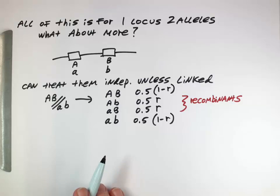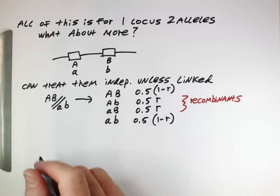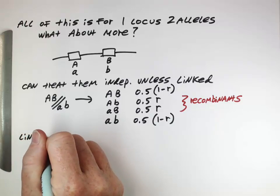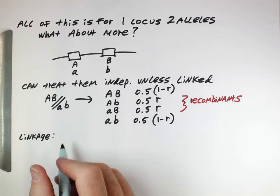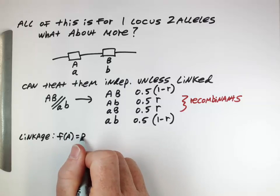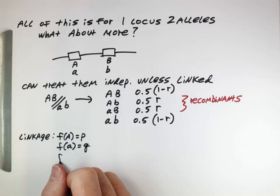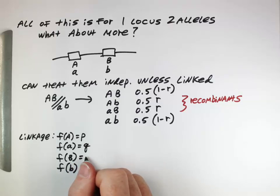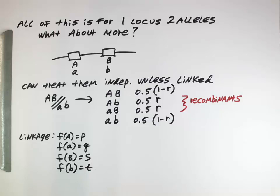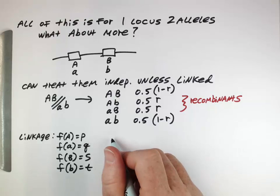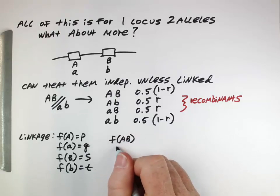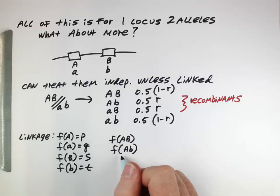Now let's look at how linkage can be mathematically examined. If we have the frequency of the capital A allele as P and the frequency of the lowercase a allele as Q — which we've been using before — now let's represent the frequencies of the B alleles with S and T. Note this S has nothing to do with selection; these are just the letters most commonly used for this formulation.